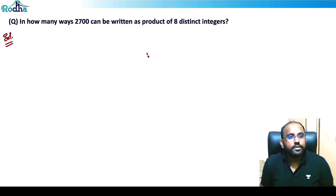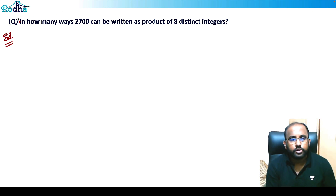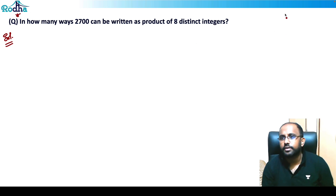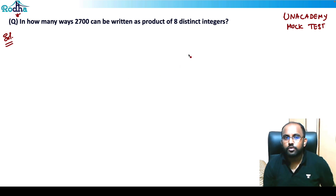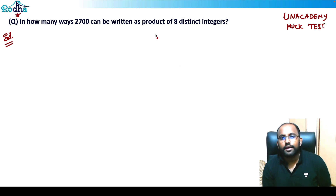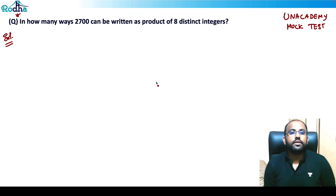Let's look at this question — it's a very good one. Try this yourself. This question was asked in a Unacademy mock test. It says: in how many ways can 2700 be written as a product of eight distinct integers?